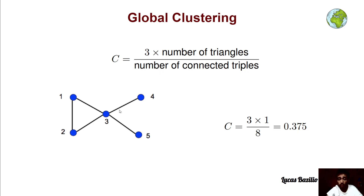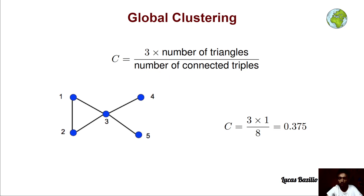We define the global clustering of a given graph G not for each node, but for all of the graph. Given graph G, we compute the global clustering as the fraction: 3 multiplied by the number of triangles in the graph, divided by the number of connected triples.